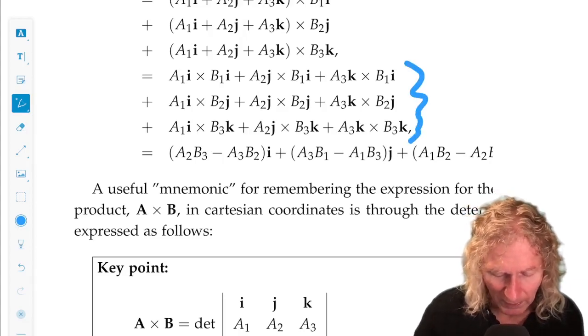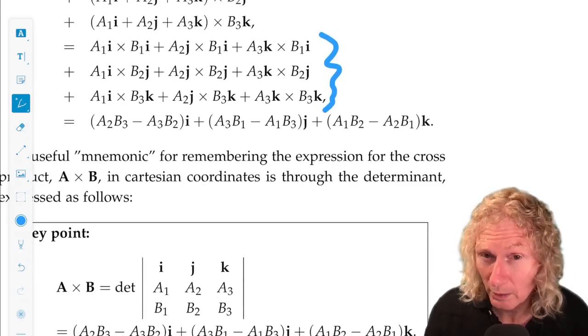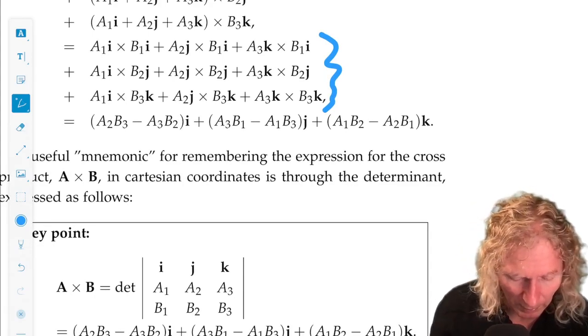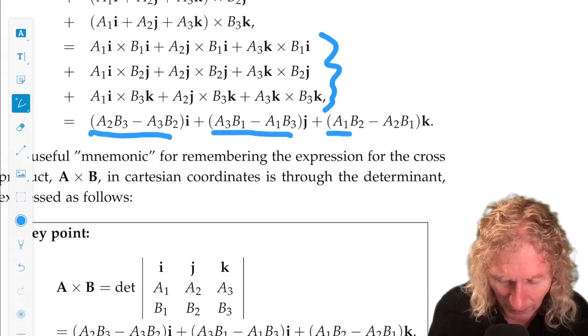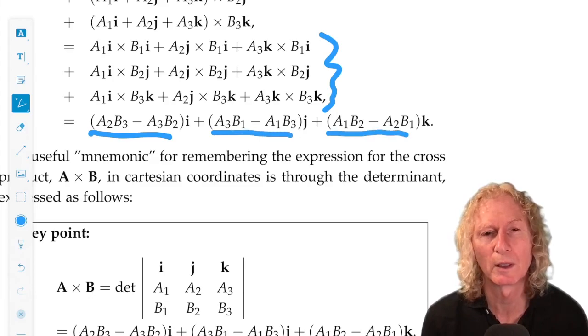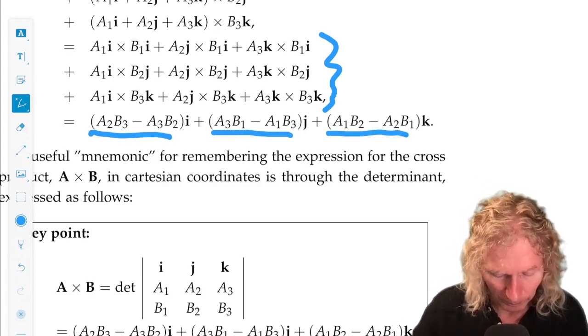And you can see that the cross product is a vector, the dot product is a scalar, but the components have this very interesting form. And there's a symmetry in this form that we're going to come back to and learn more about as we go through the course.